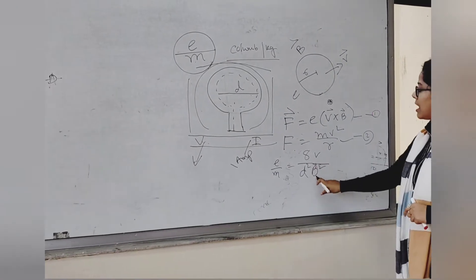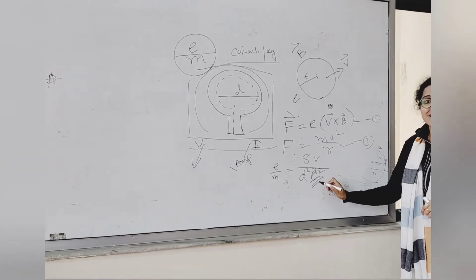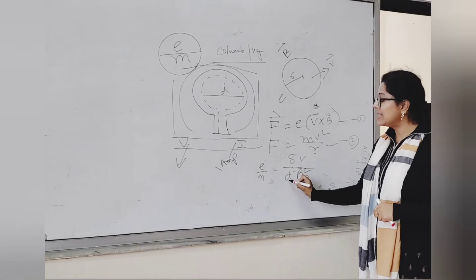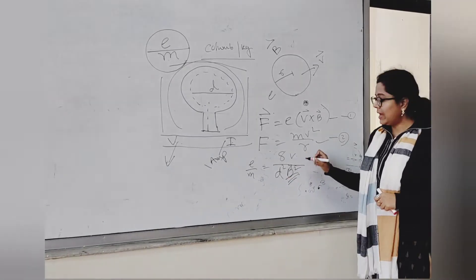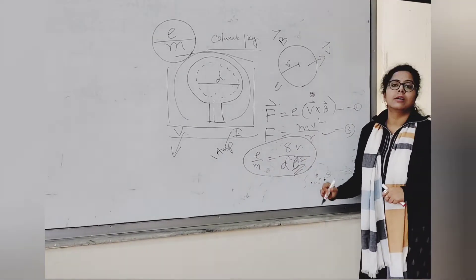Now nothing is unknown here. B is the homogeneous magnetic field strength. We have to find out the B. B has a working formula as well. D is the diameter. V is the voltage. So we can easily find out the charge by mass ratio.